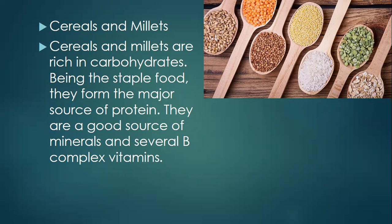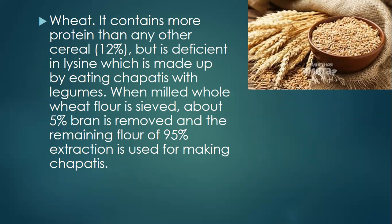Cereals and pulses are rich in carbohydrates. Being the staple food, they form the major sources of protein. They are a good source of minerals and several B-complex vitamins. Wheat contains more protein than any other cereal. For example, protein consists of 20%, but is deficient in lysine, which is made up by eating chapatis with vegetables.